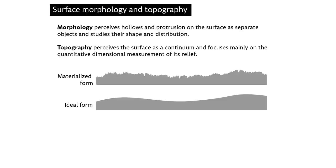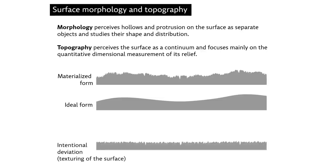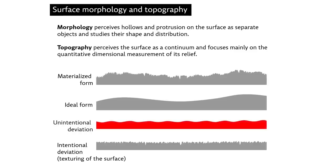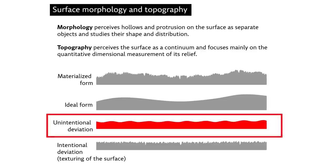These deviations reflect the forming history of the object. The deviations from the ideal geometry can be intentional for some functional or aesthetic reasons, or unintentional, caused by negligence, lack of skills, or lack of motivation to achieve the intended geometry. The unintentional deviations are the most important from the perspective of the analysis of forming because they manifest forming techniques and their mastering.